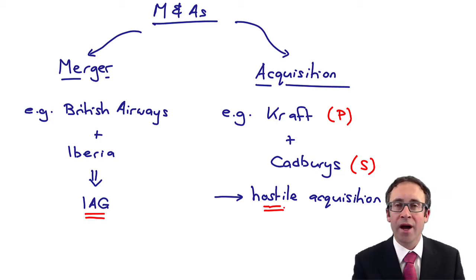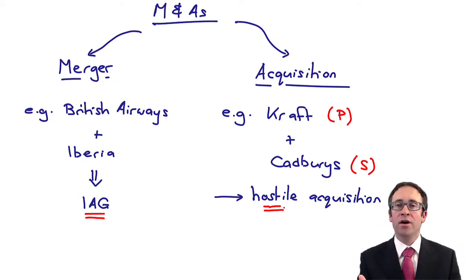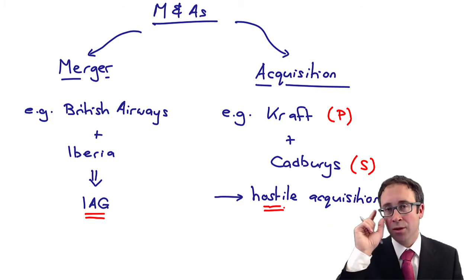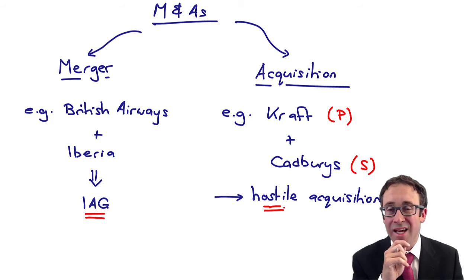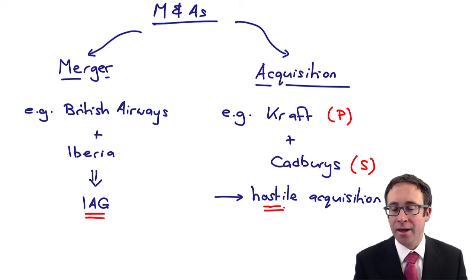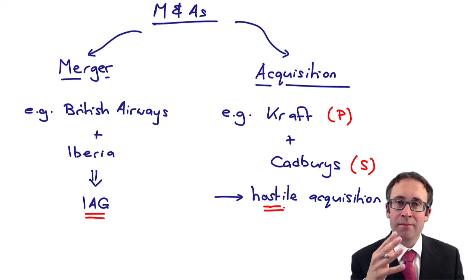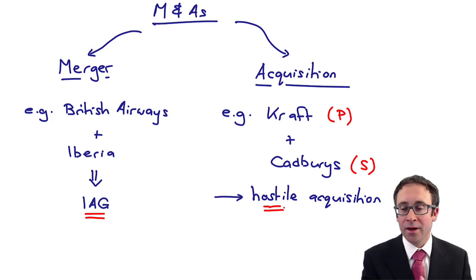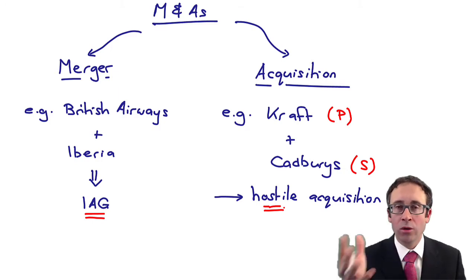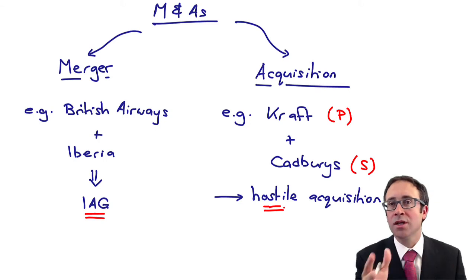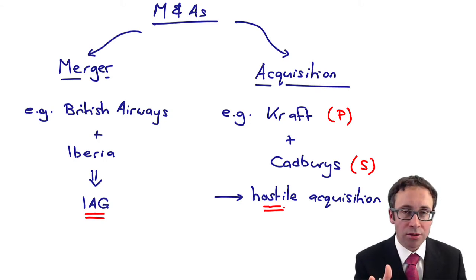Also, maybe there were other bidders that were preferred by the directors of Cadbury's. Maybe they would have wanted somebody else to take them over - maybe Nestle, maybe Ferrero, maybe Mars, maybe Hershey's would have been more of a preferred bidder. However, even though Cadbury's felt that the bid may have been undervalued or that they had a preferred bidder, Kraft still went ahead with the acquisition and were ultimately successful.